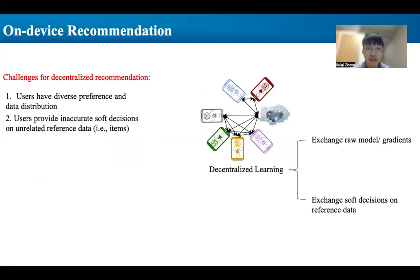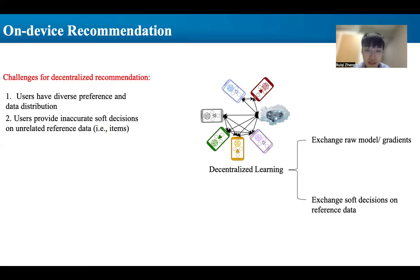However, decentralized on-device recommendations present unique challenges compared to decentralized learning in computer vision or natural language processing tasks. Users have diverse preferences and data distributions, unlike a flower classification task where each user preserves private data following similar data distribution. In recommendation tasks, users have diverse preferences and click histories. Moreover, users are unlikely to provide accurate information for items they are not interested in, that is, the unrelated reference data.